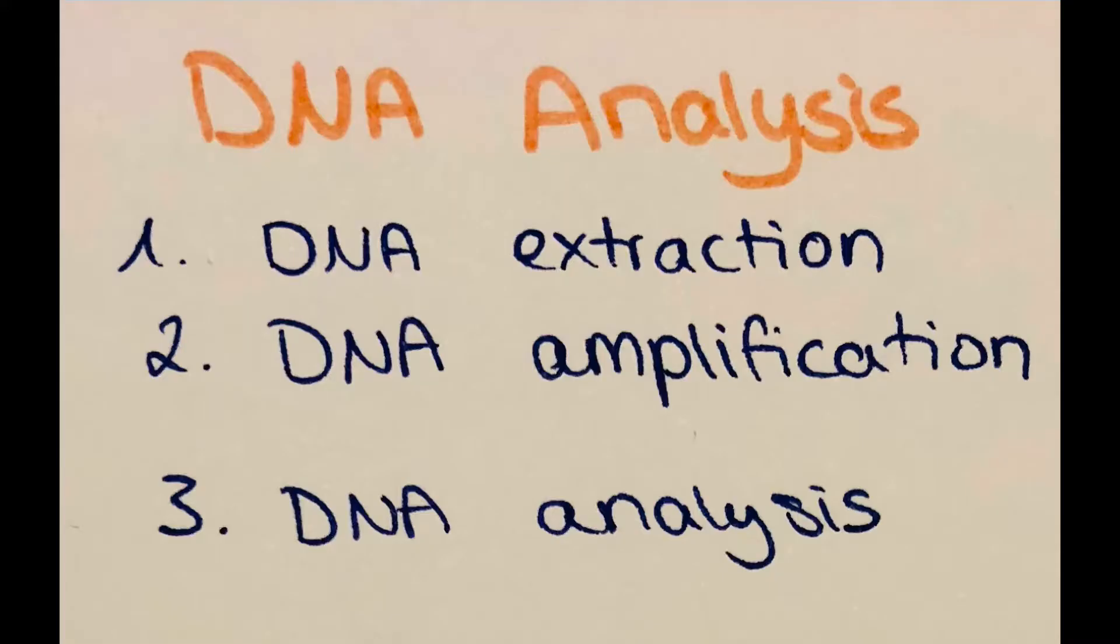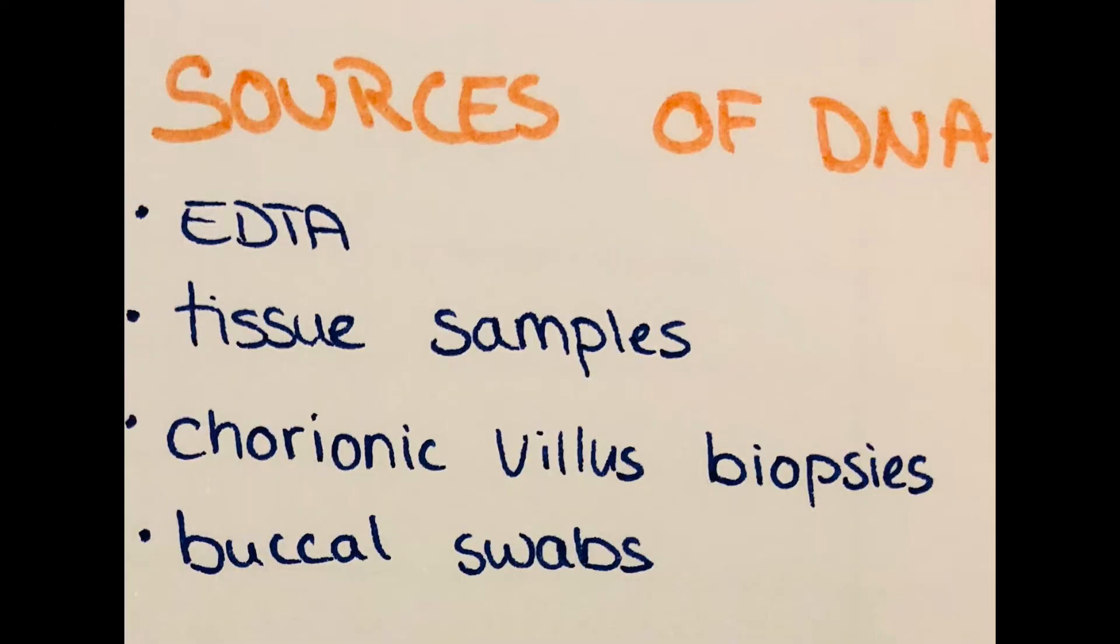The next point is DNA analysis. In general there are three main steps: the first is the extraction of DNA, the second is the amplification of DNA by PCR, a method we will soon talk about, and DNA analysis with different tests. Sources of DNA are anticoagulated whole blood, frozen or fresh tissue samples, chorionic villus biopsies or cultures of amniocytes, and also buccal swabs from the inner lining of the cheek.